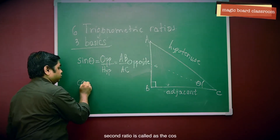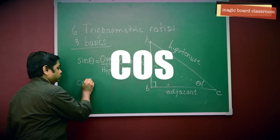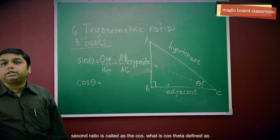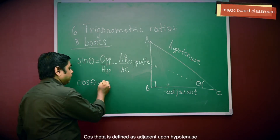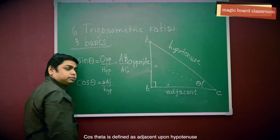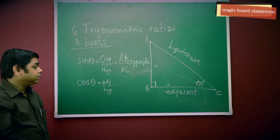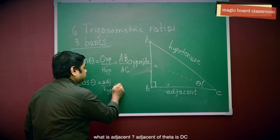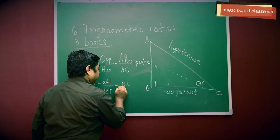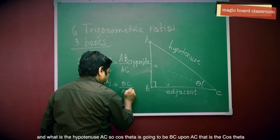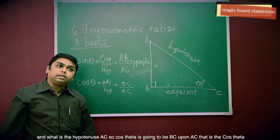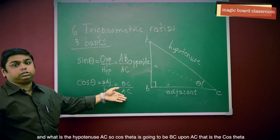The second ratio is called cosine, or cos. What is cos theta defined as? Cos theta is defined as adjacent upon hypotenuse. So what is its adjacent? The adjacent of theta is BC, and the hypotenuse is AC. So cos theta is going to be BC upon AC.